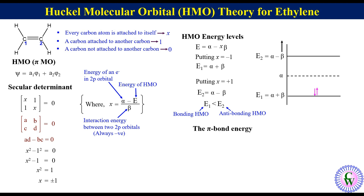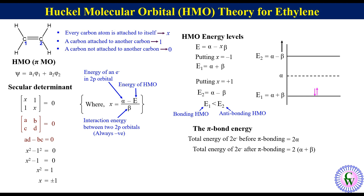The pi bond energy. The total energy of two electrons before bonding equals 2α. The total energy of two electrons after pi bonding equals 2(α + β). So the pi bond energy equals 2α + 2β − 2α = 2β.